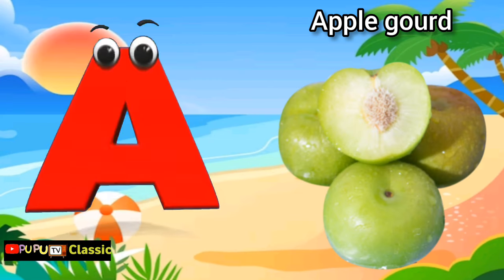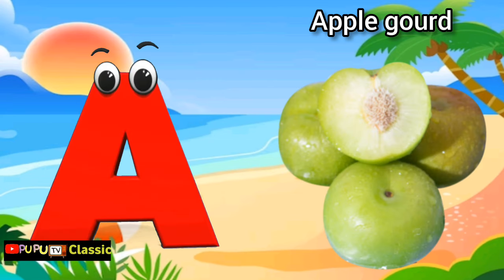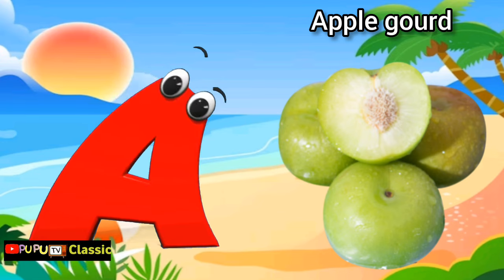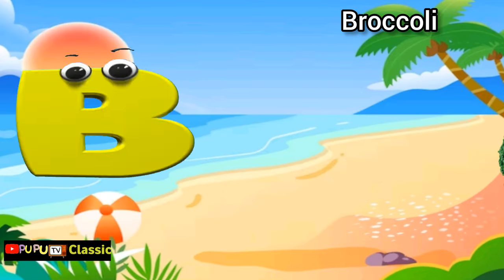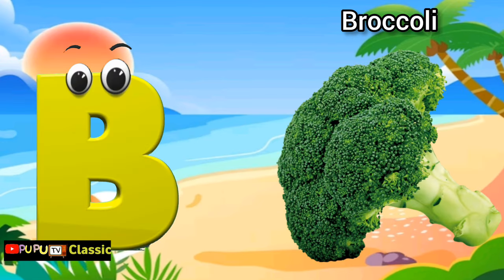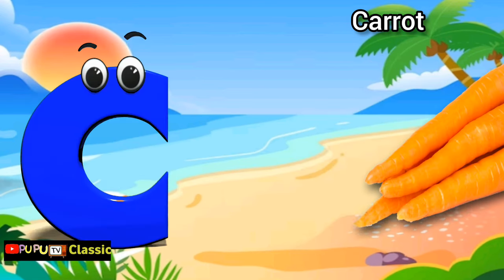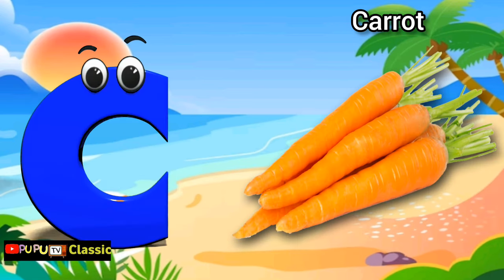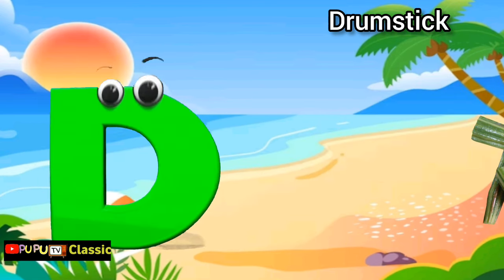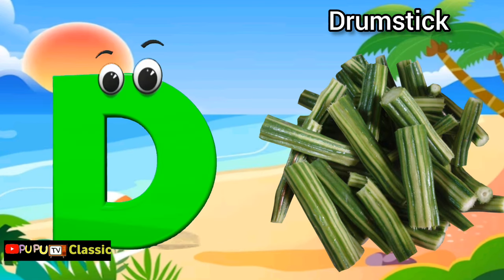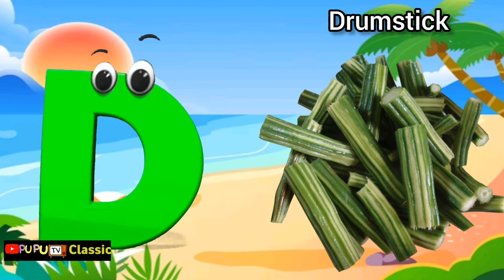A is for apple gourd, apple gourd. B is for broccoli, broccoli. C is for carrot, carrot. D is for drumstick, drumstick.